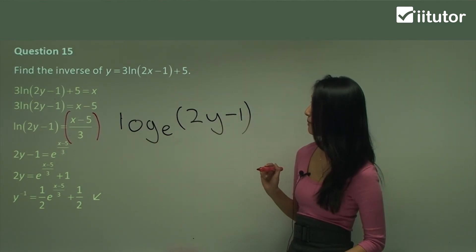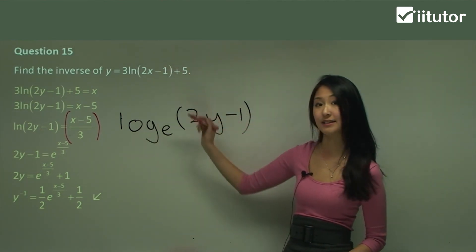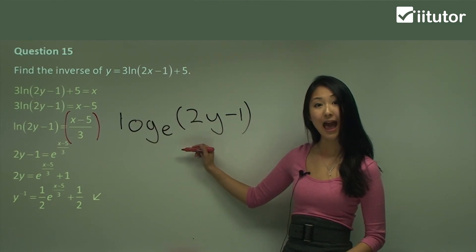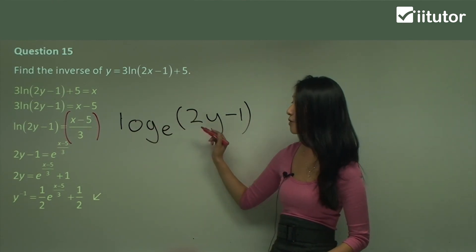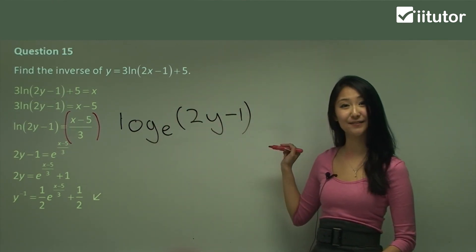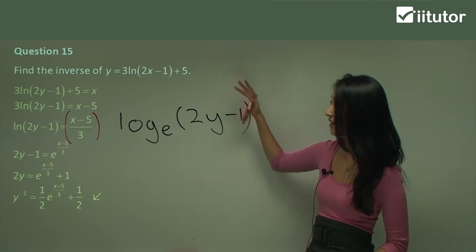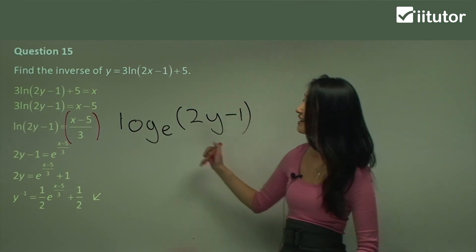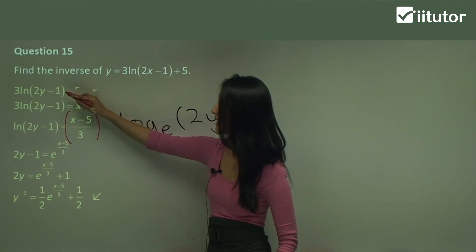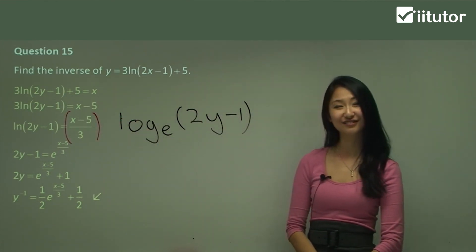So what I want you to remember is that ln actually stands for log base e, and we just need to reverse that back into index form. No matter how complicated the expression, just work from the outside in and use the logarithm rule.